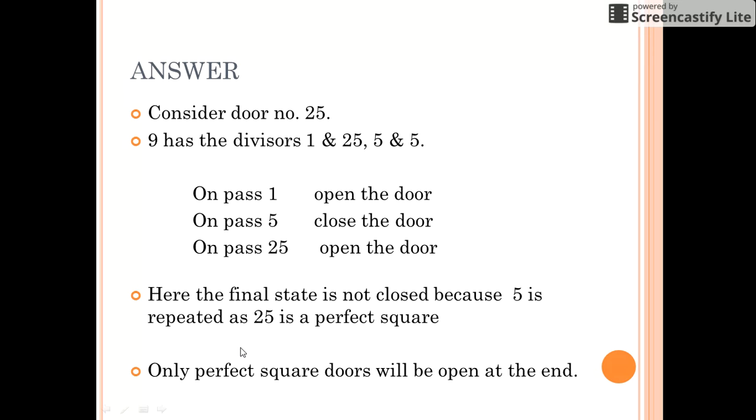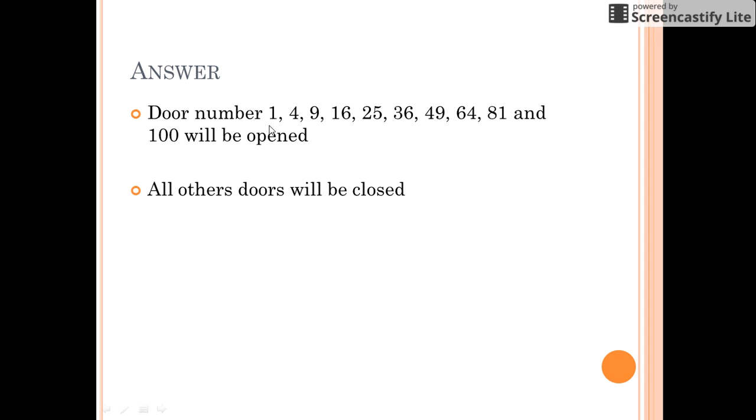So what we find is that only perfect square doors will be open at the end. So the doors 1, 4, 9, 16, 25, 36, 49, 64, 81, and 100 will be open in the last, while all the other doors will be closed.